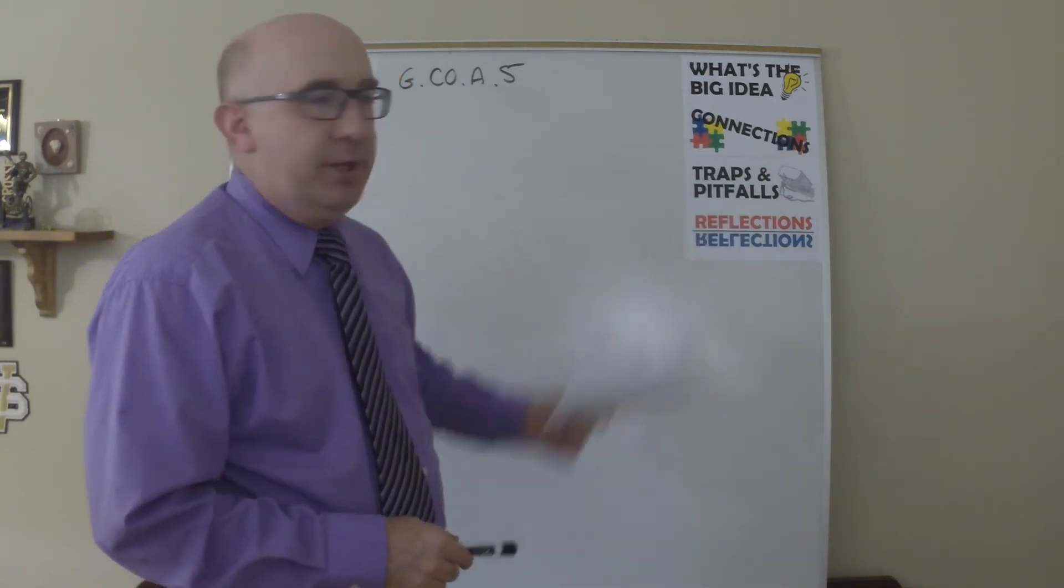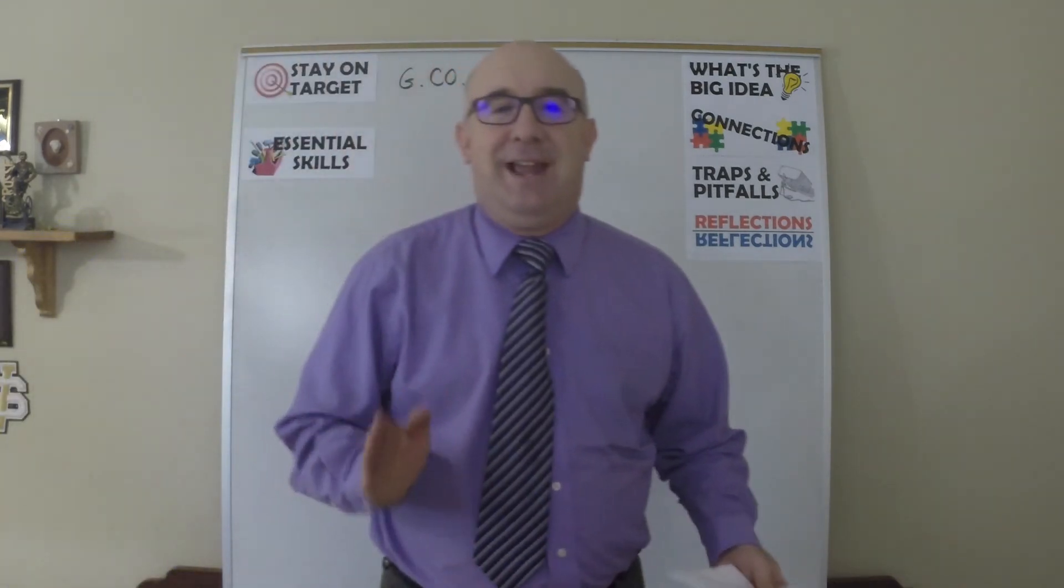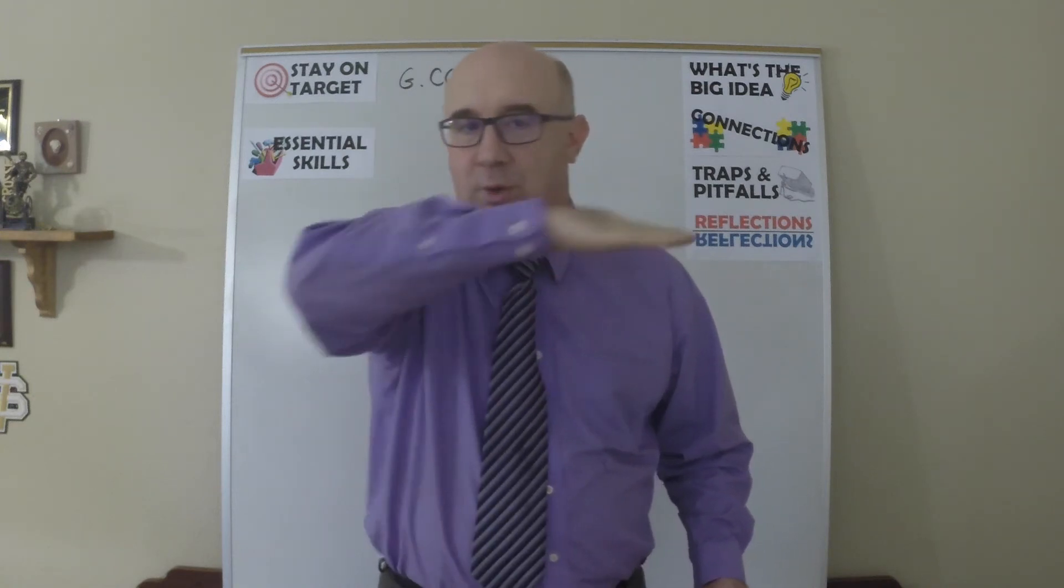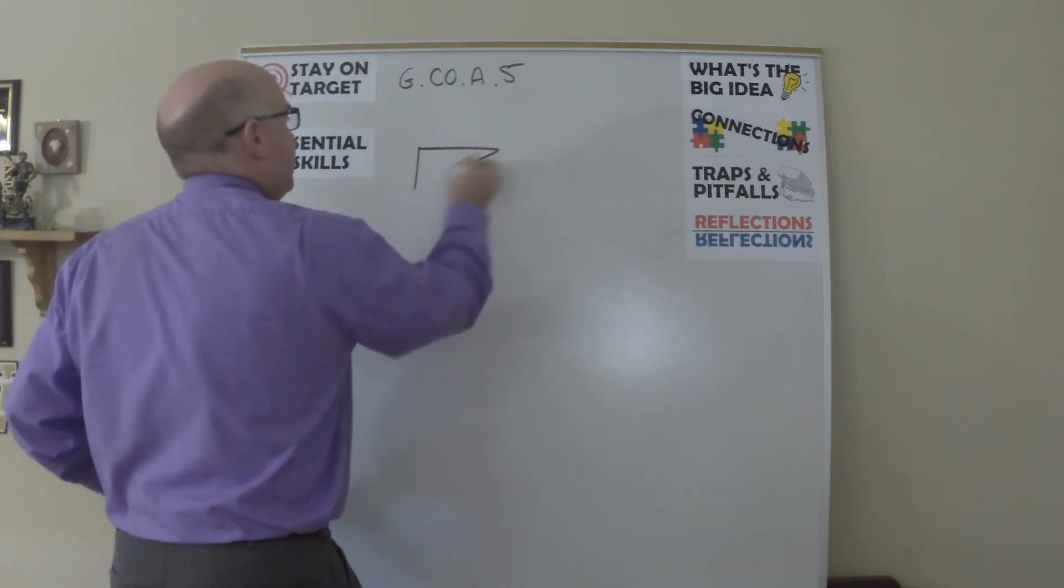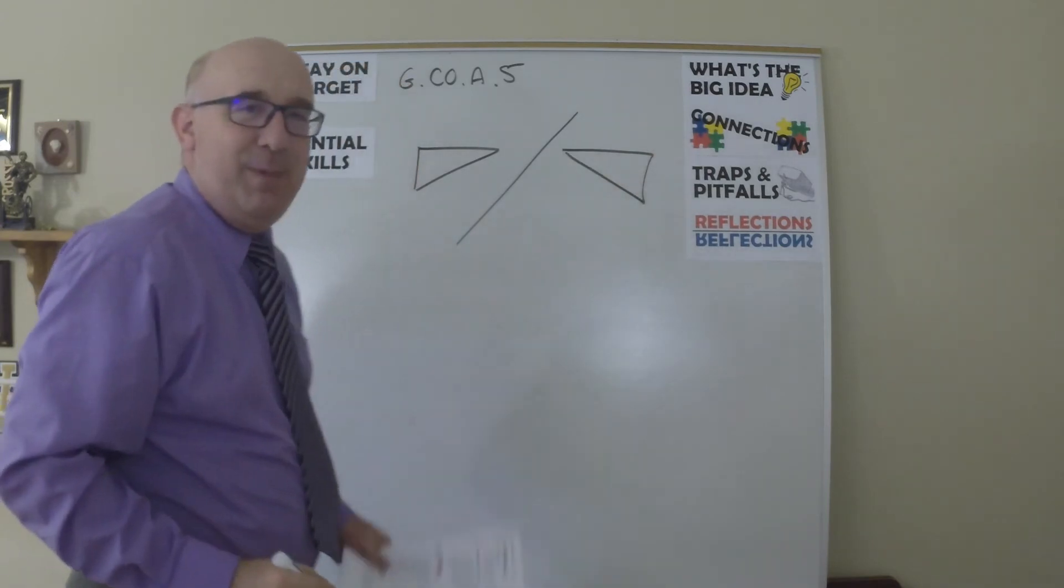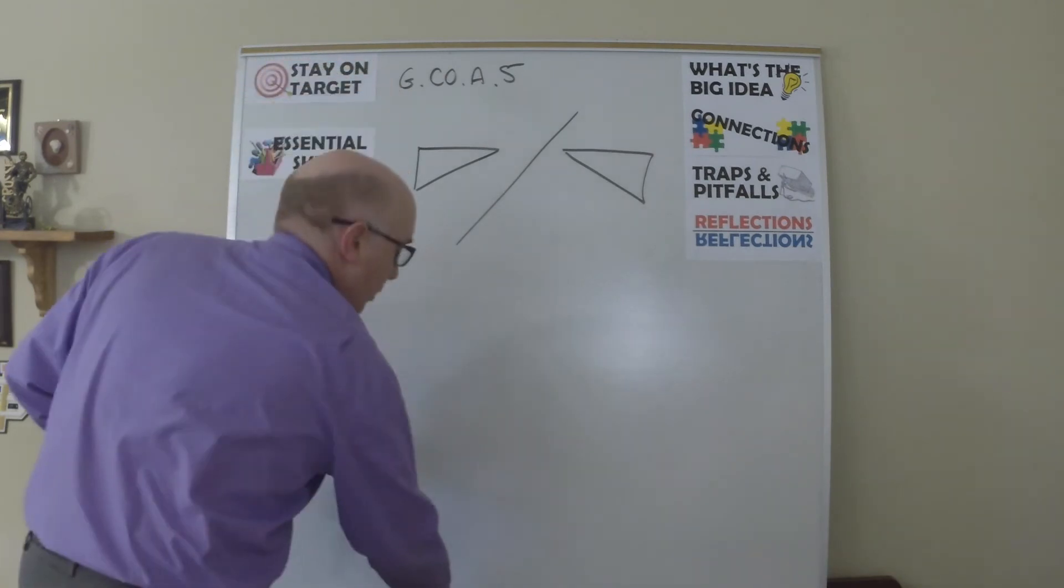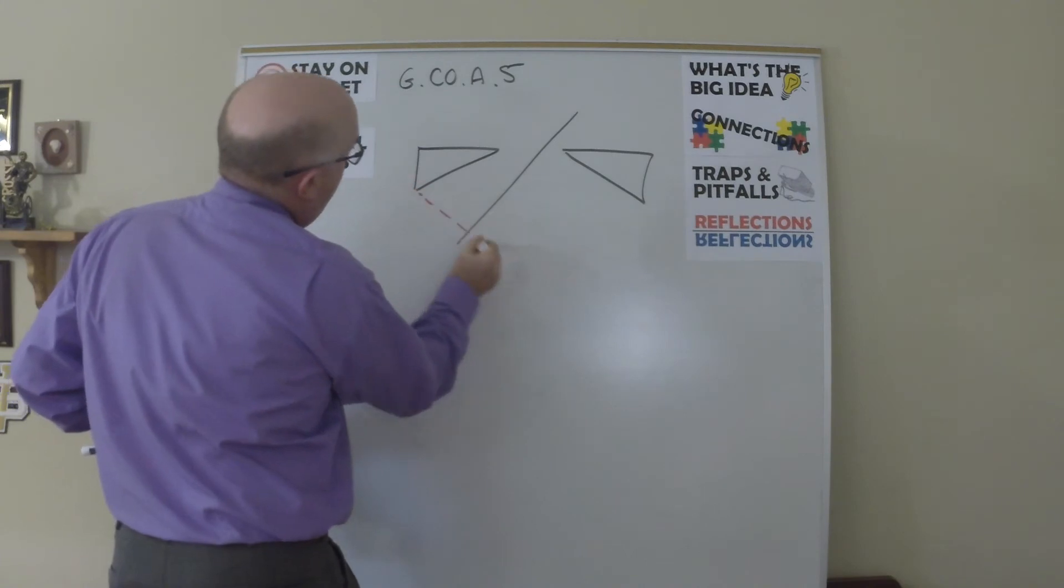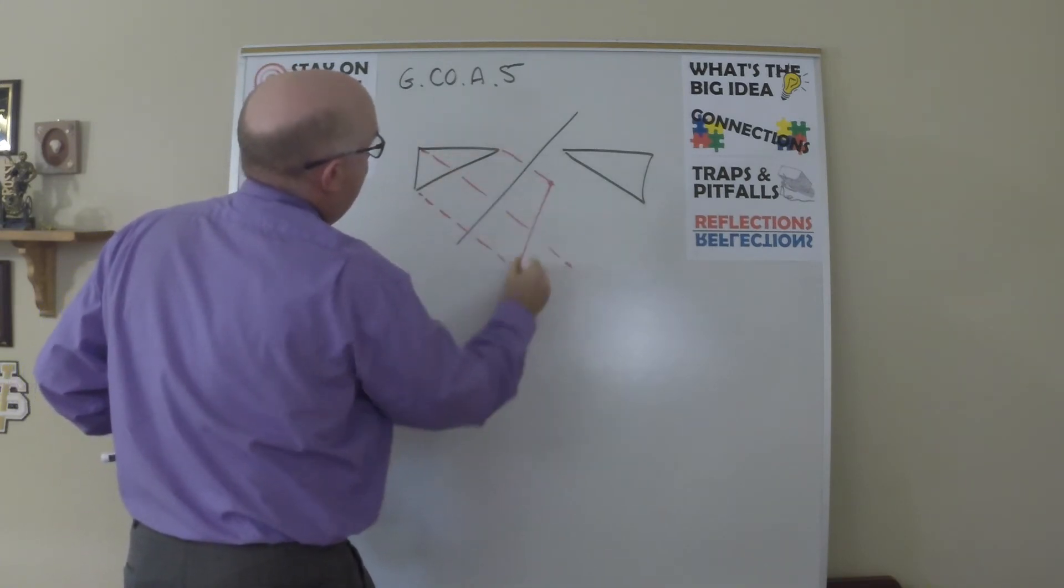What are the traps and the pitfalls? Well, one is lots of students reflect easily when horizontal or vertical lines are used. If we ask a student to reflect over a line like this, too often I see this as my answer. And they are missing the idea of what it means to reflect over that perpendicular bisector. That there would be a point here and a point here and a point here, and that this, of course, should be the answer that we're looking at.